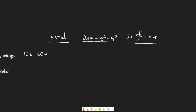For example, the first equation (V = AT) does not use distance at all, so if you're not given the distance traveled, you can use this equation. The second equation does not use time, so if you're not given the time, you can use that one. The third equation does not require final velocity — if initial velocity is zero, it tells you the distance traveled over a given time while accelerating.